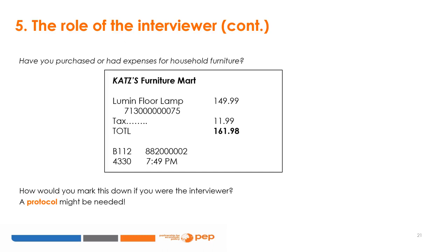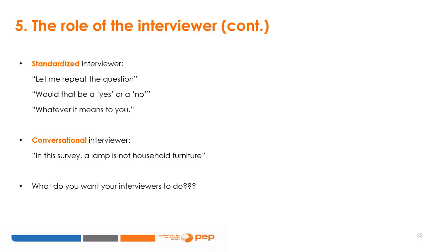The enumerator also has a significant role in respondents' answers. The enumerator can make decisions on how answers are coded — for example, is a lamp a piece of furniture? A shared protocol must be established. A standardized interviewer follows a script, saying phrases like 'let me repeat the question' or 'would that be a yes or a no?' A conversational interviewer conducts interviews with less structure. The choice depends on context and the type of intervention.